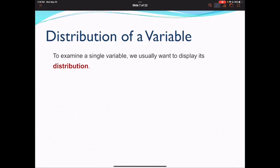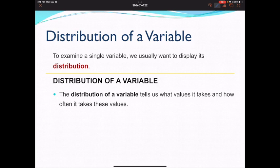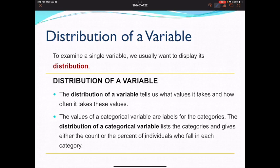We also want to look at the distribution of a variable. We want to look at where its values fall. To examine a single variable, we usually want to display its distribution. So the distribution tells us what values it takes on and how often it takes on these values. The values of a categorical value are labels for these categories. The distribution of a categorical value lists all the categories and gives either the count or percentage of individuals who fall in this category. So for example, typically this class is 75% freshman. A lot of freshmen take this course. So that'd be one way to describe the distribution of the variable, which in this case would be class standing.